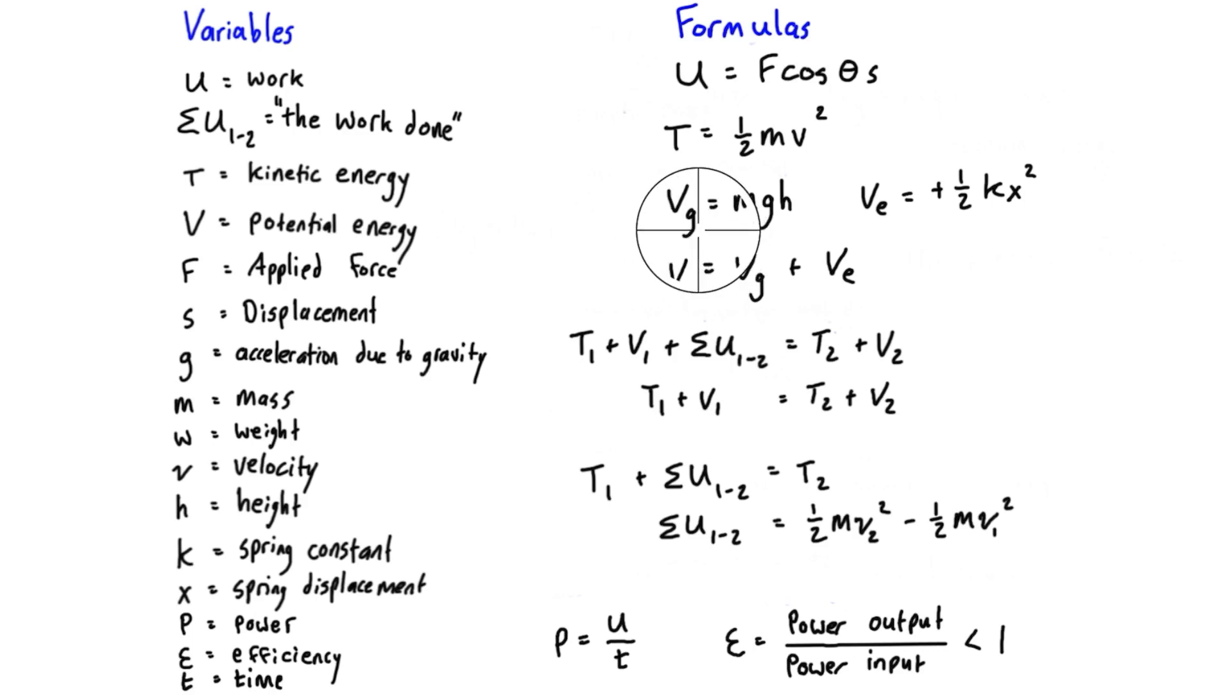When we see capital V, that's referring to potential energy. We're going to be finding gravitational potential energy, which is mgh - mass times acceleration due to gravity times height in meters.